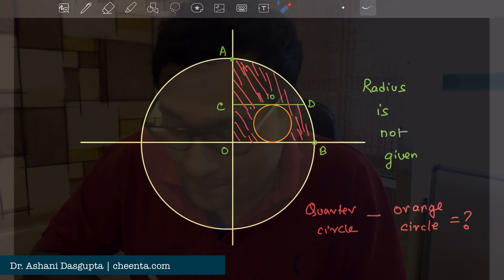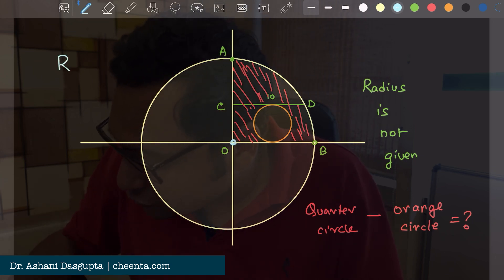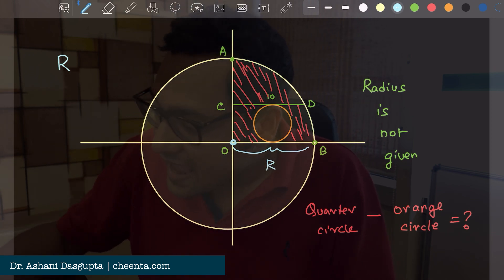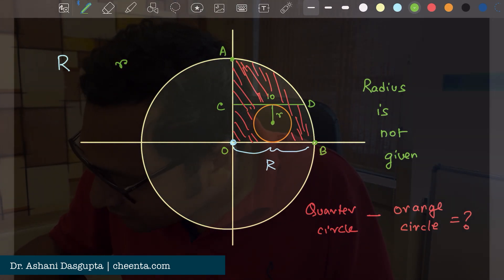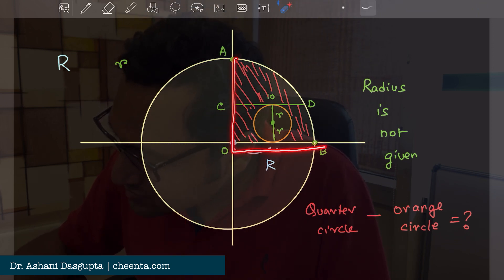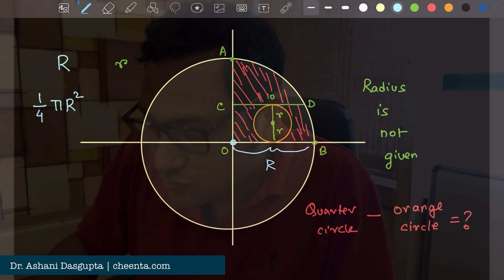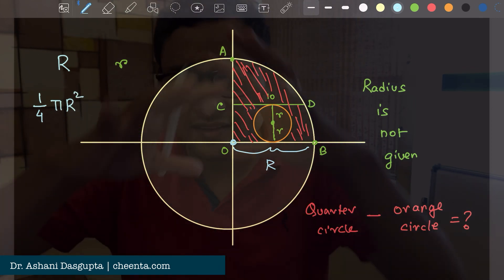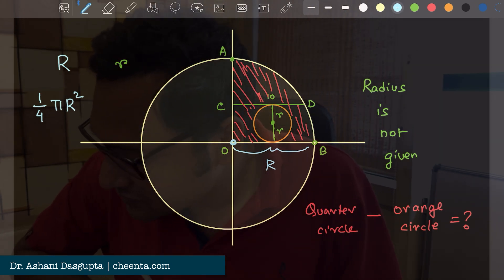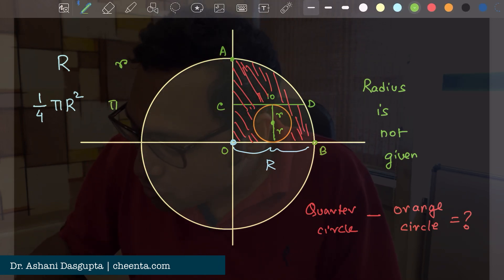Suppose the radius of the bigger circle is capital R. This length is capital R, and the radius of the smaller circle is small r. So this is basically 2r. What is the area of this quarter circle? Well, it is one-fourth of π capital R squared. π capital R squared is the area of the bigger circle; you just take one over four of that. What is the area of this small circle? It is just π small r squared.